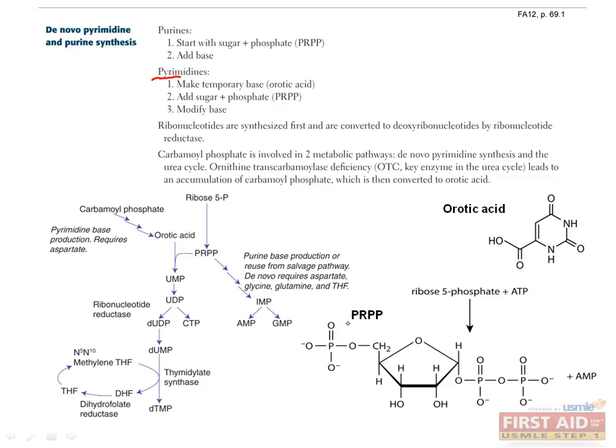Let's move on to pyrimidines. These also use PRPP, and also need another precursor called orotic acid, or orotate. Orotic acid is made from a precursor molecule called carbamoyl phosphate, and this is covered in one of the later biochemistry lectures. The only thing I want to mention here is that if someone is deficient in the enzyme ornithine transcarbamylase, or OTC, they'll have a buildup of carbamoyl phosphate, which will also increase the amount of orotic acid.